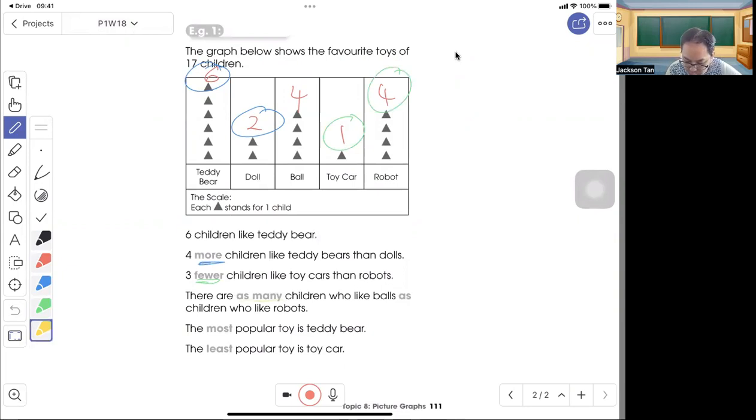And there are as many children who like balls as children who like robots. So ball is four, robot is four. As many as means same.